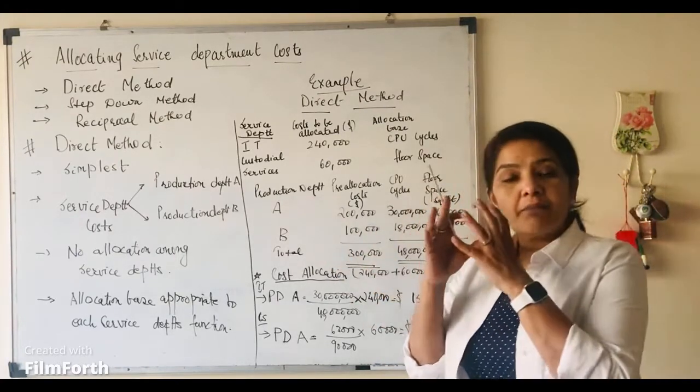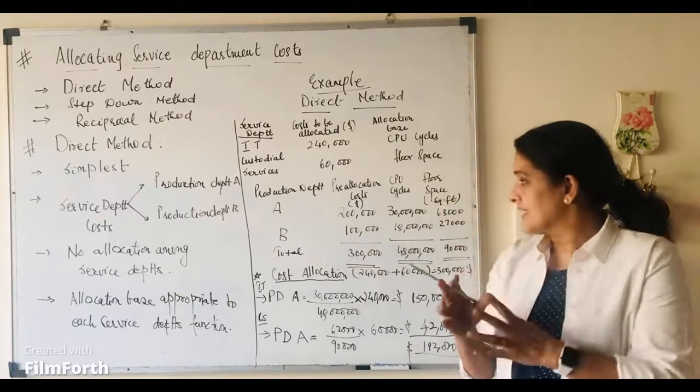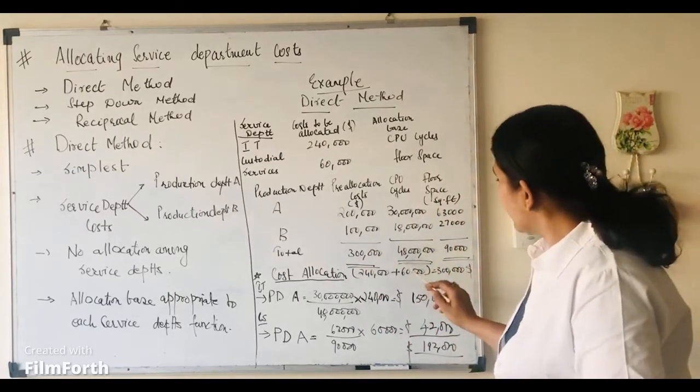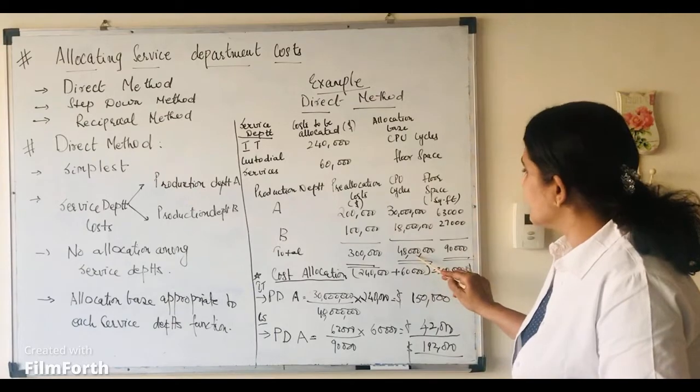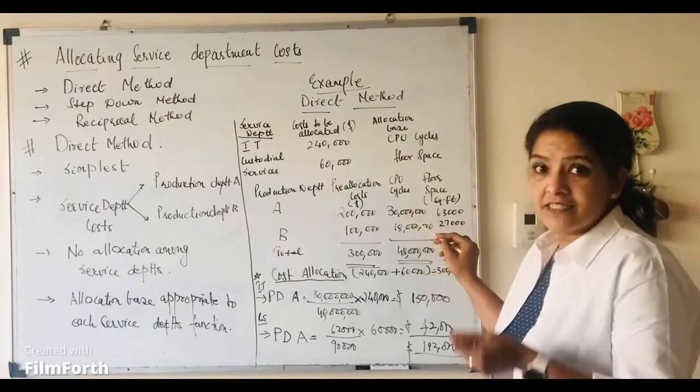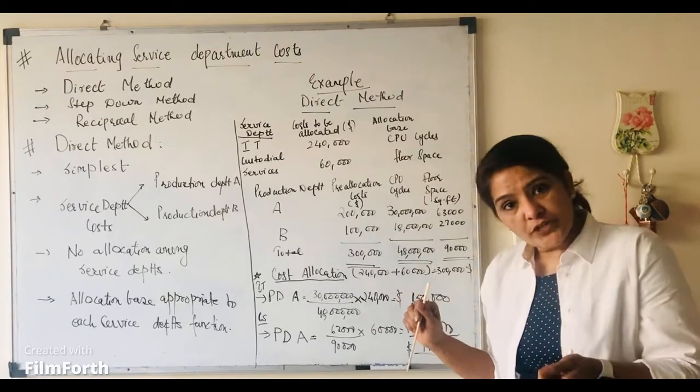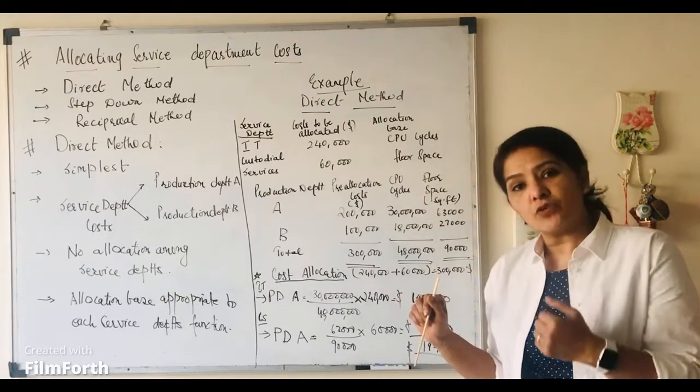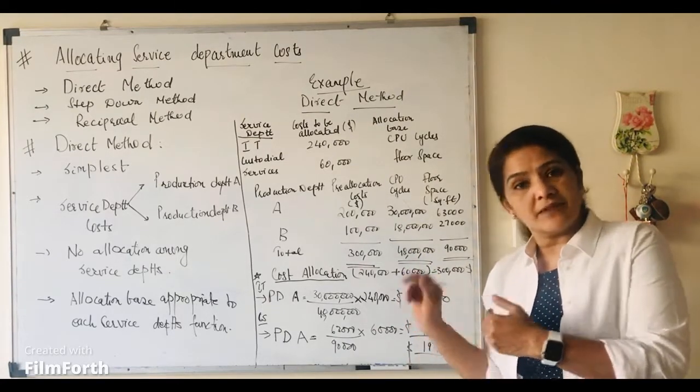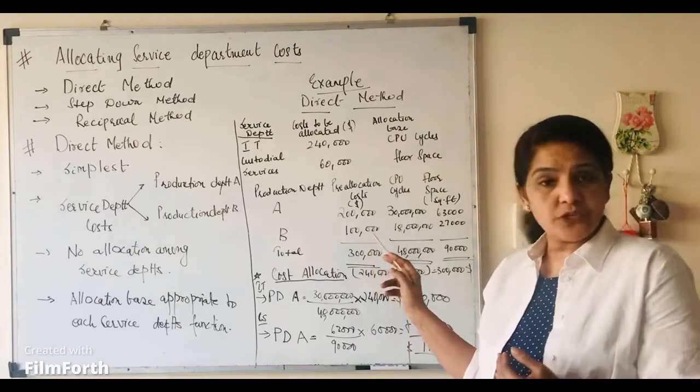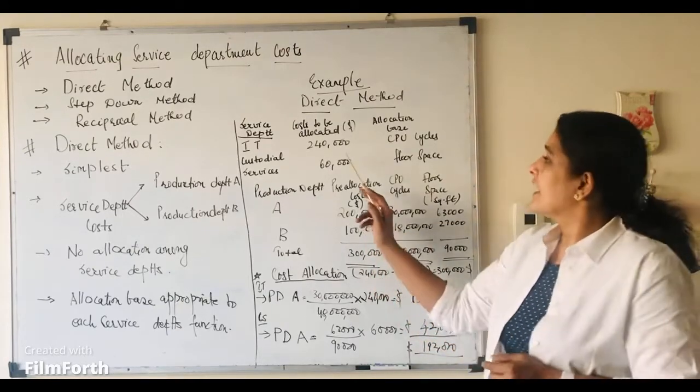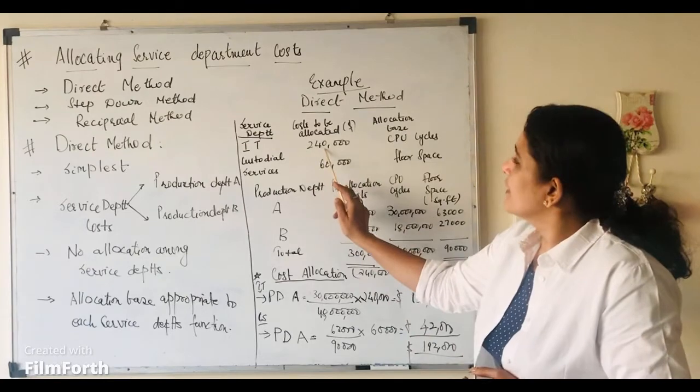Now, if you take production department A, out of the 48 million CPU cycles, it has used up 30 million CPU cycles. So, in this case, we will find out the proportion of the CPU cycles as compared to the total CPU cycles that production department A has used up and then we will allocate this $240,000 to it.